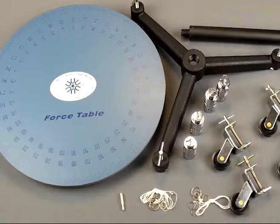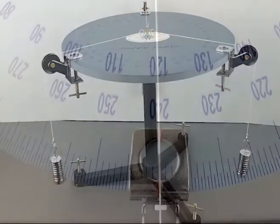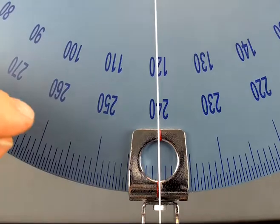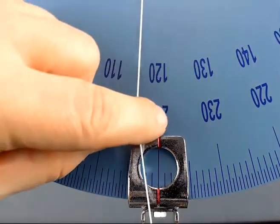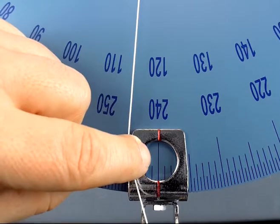The force table comes unassembled, but it can be put together very quickly. Then there you go, it's that easy to set up. The large angle of the protractor makes it very easy to read exactly what angle you have each vector set up at.